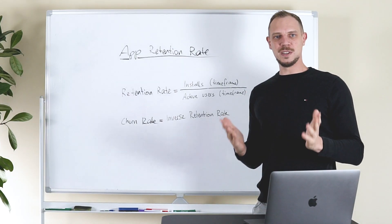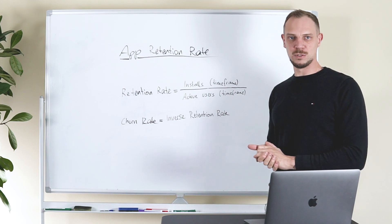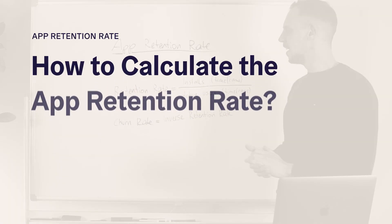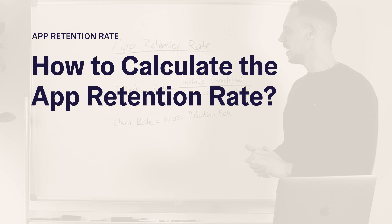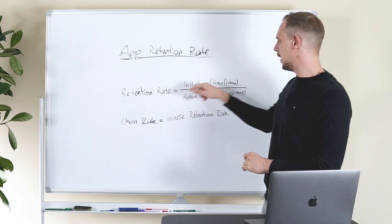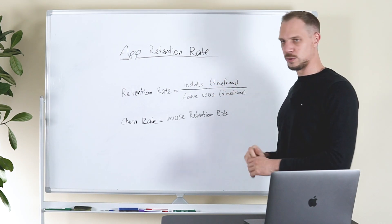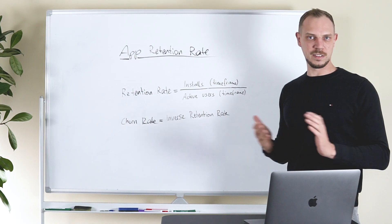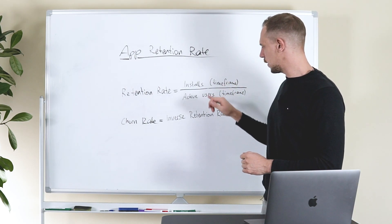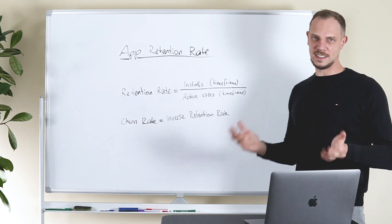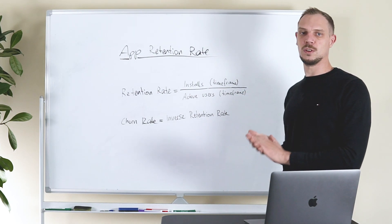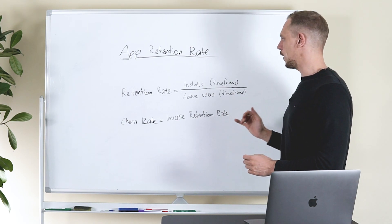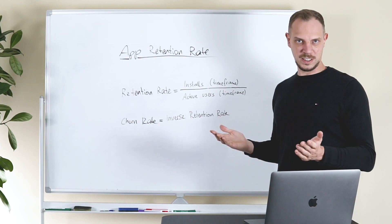When we talk about the retention rate, it is also important to check out how the retention rate is being calculated. The retention rate is the amount of installs which you're generating within a specific time frame, let's say for example the last 30 days, divided by the active users which you had exactly in the same time frame. When you do this calculation, then you find out the retention rate for the last 30 days.